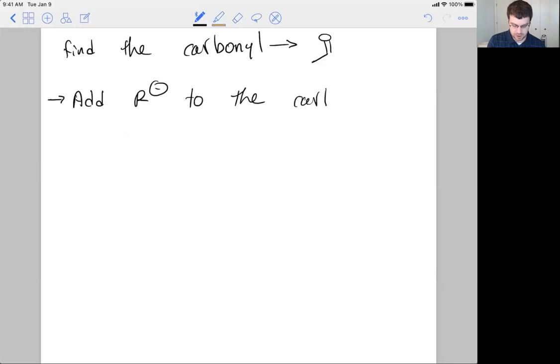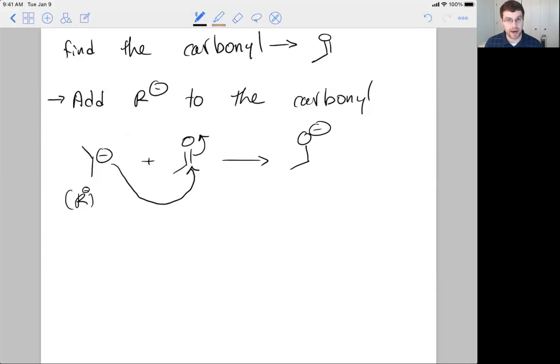the hangover molecule. We'll talk about that in some upcoming lectures on alcohol oxidation. Anyway, so we have our carbonyl. Then what we should do is add R minus to the carbonyl. There's a few ways you could approach this. So we could have R minus, which is this molecule.